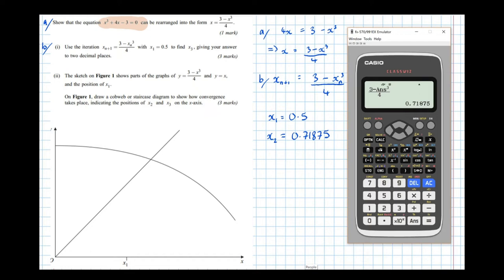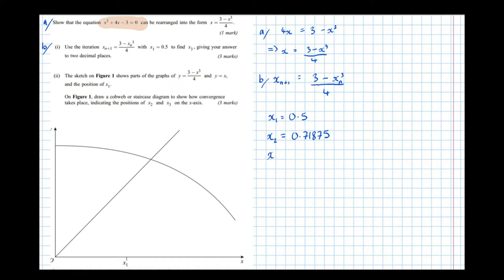Then, that's now saved in the answer button. So if we press equals again, we get the next term, the next iterate, which is 0.65717. So x3 equals 0.61757. So that's b part 1 done.